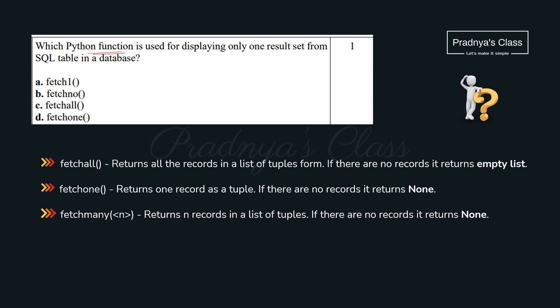The next question asks which function is used to display only one result set from the SQL table. The answer is fetchone — it is a function used to retrieve a single record.